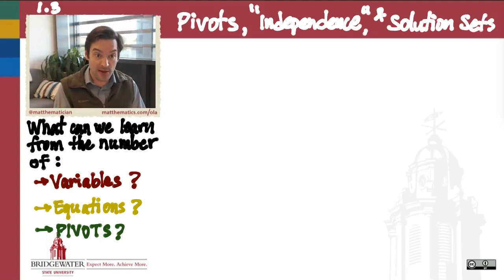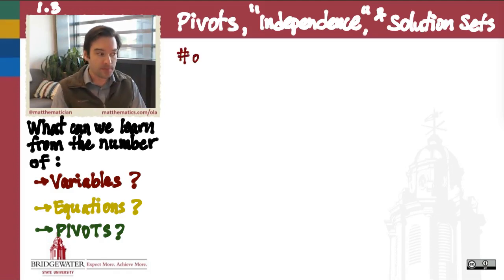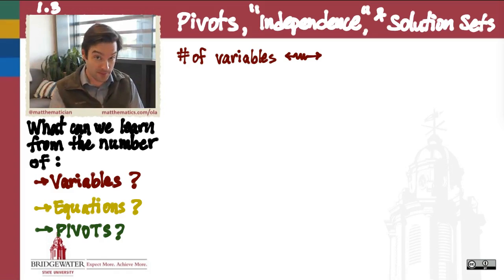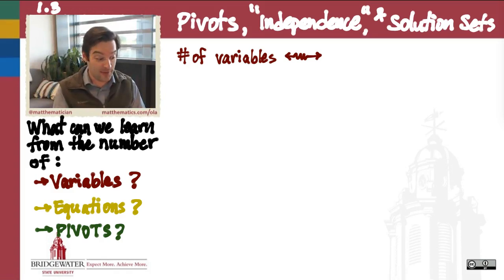So we're going to work in these next couple of videos at building out our geometric intuition for what solutions of linear systems of equations actually look like. Let's start by thinking about the number of variables that participate in a linear system. If I'm going to find a solution to that system, what I'm really trying to do is supply information about all of the variables in that system.